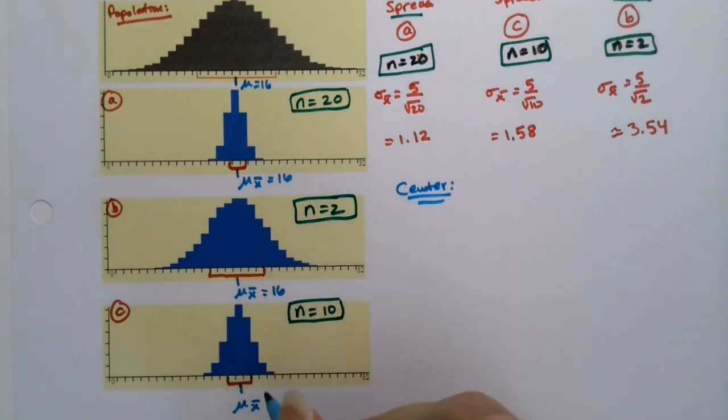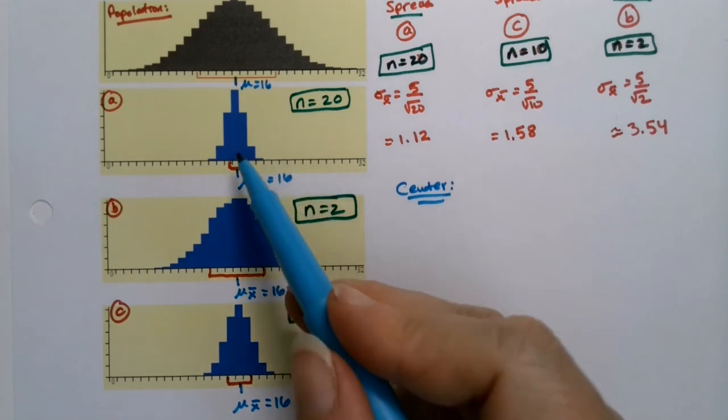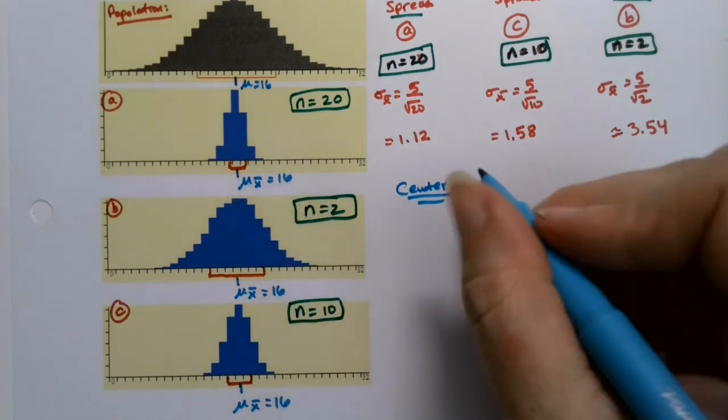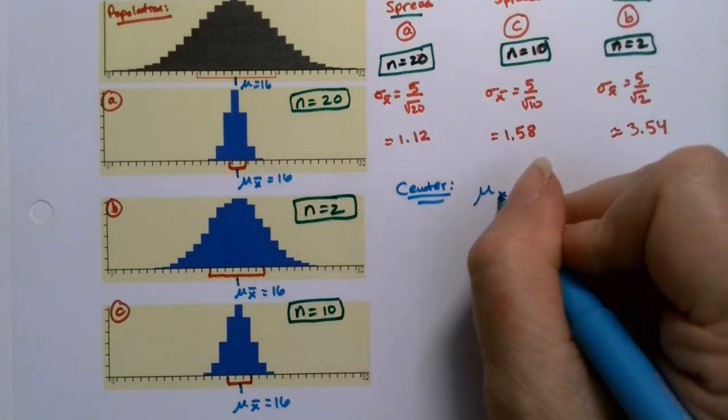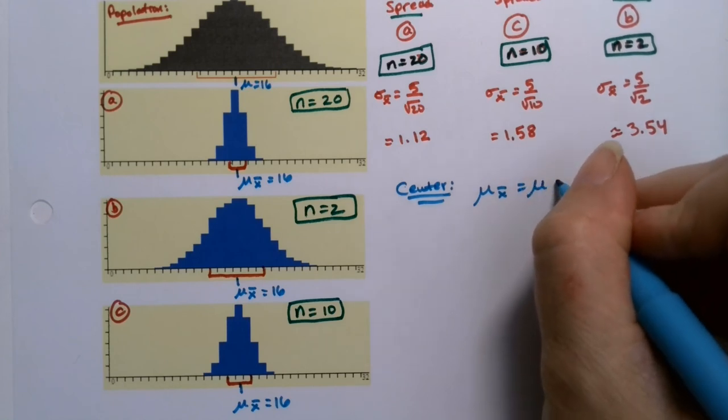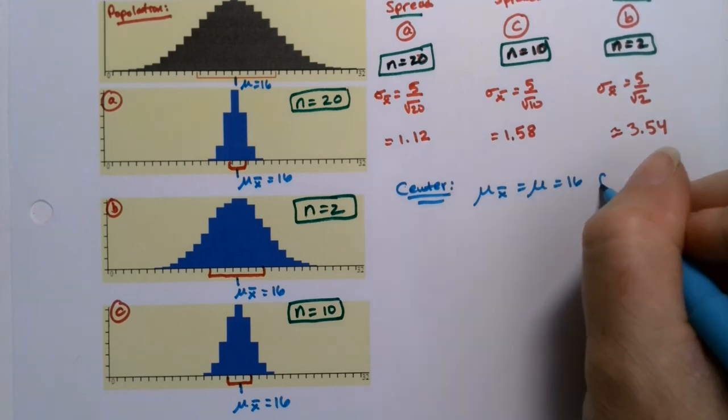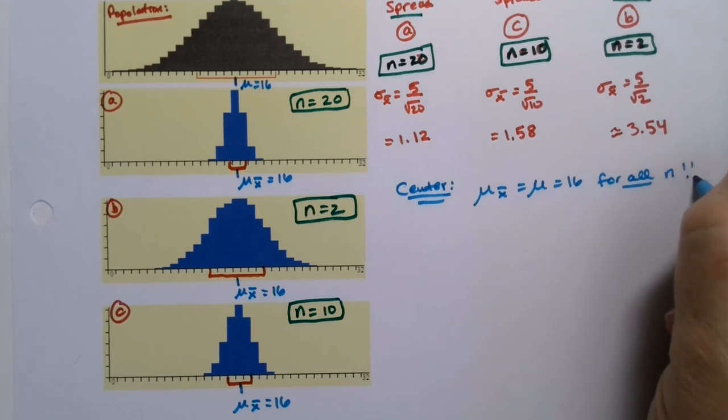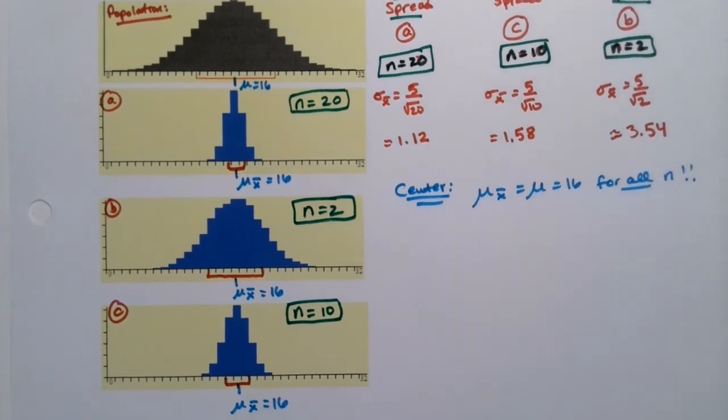Samples of size 20, samples of size 2, and samples of size 10. The larger the sample, the smaller the spread. So that's why this one's the smallest. But the centers never change. The center is 16 all the way down. You can see the graphs line up. So the center is the mean of the x bars, which is the mean, which is 16, for all n. No matter what your size of n is, the center is the same number, always.